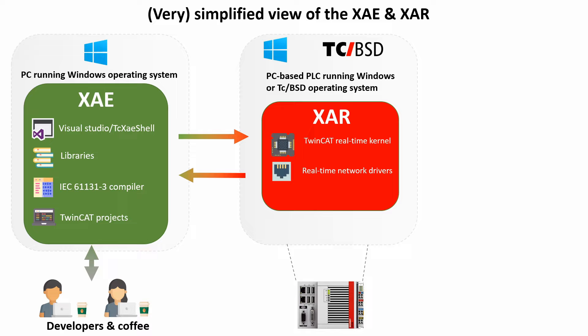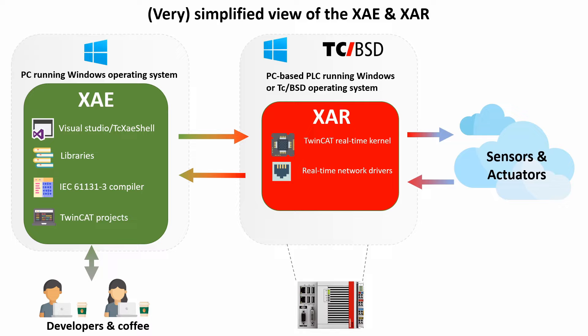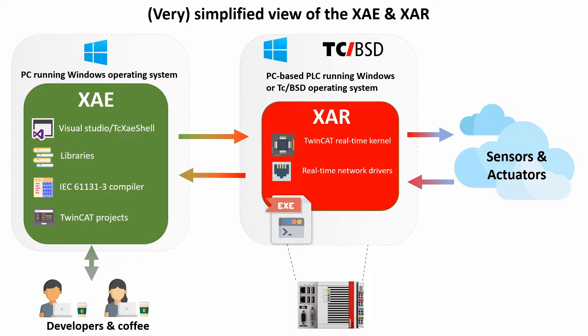Through fieldbus interfaces, TwinCAT can communicate with various sensors such as temperature, pressure, and position sensors, and it can also actuate actuators such as relays, valves, and electric motors. When you have successfully compiled a TwinCAT 3 project on your XAE development machine, it will create an executable binary. Through the integrated development environment, we can transfer this program to the XAR and execute it so that it's running in the real-time environment of TwinCAT 3.